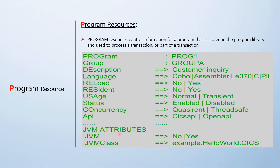If your program is a Java-based program written in Java, you can use Java attributes such as the class name, and whether it is Java — yes or no — can be specified in the program resource definition.